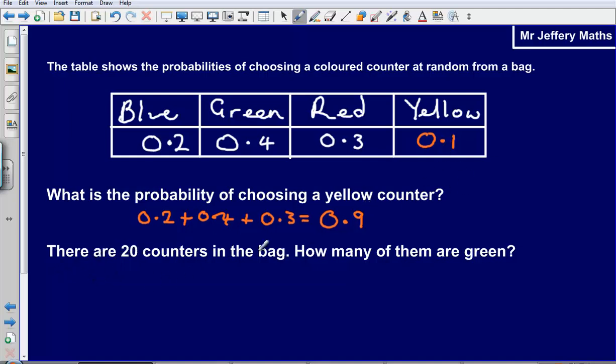Part 2 says there are 20 counters in the bag. How many of them are green? To work this out all we do is we take our amount which is 20 and multiply it by the probability.